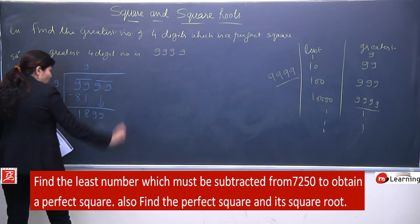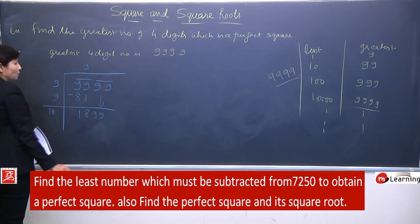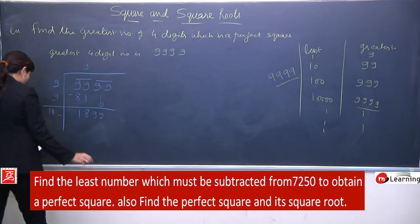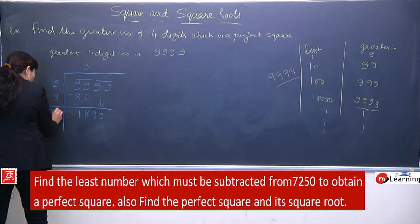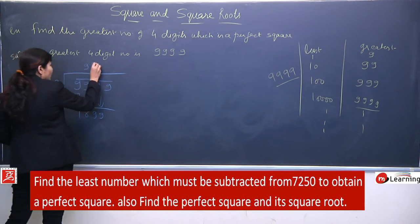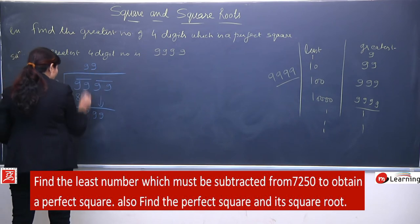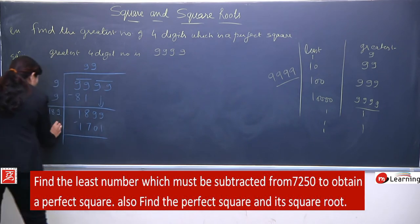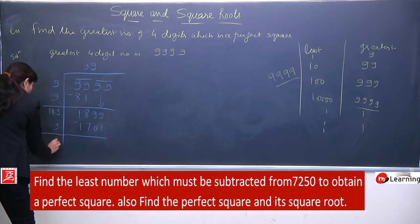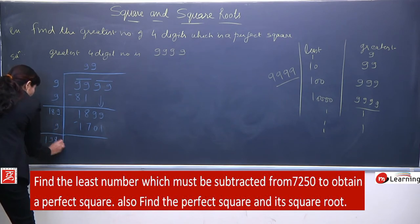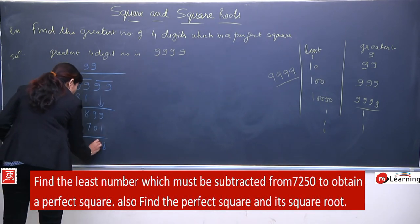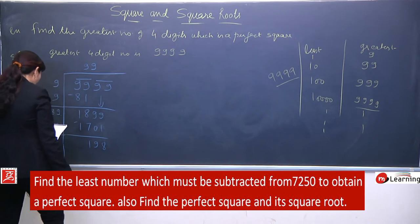We have copied pair 99. Yahan jo number lenge wahi yahan bhi likhna hoga. Table banake dekhne pe 189 × 9 = 1701. Isko subtract karke yahan 9 add ho jayega — so it becomes 198. 9 mein se 1 subtract hua: 8, 9 — 198 is your remainder. Jabki, agar ye perfect square hota toh remainder 0 hota — but abhi remainder 198 hai, means 198 yahan extra hai.